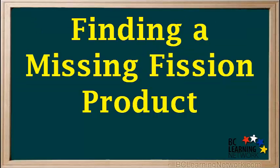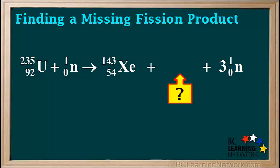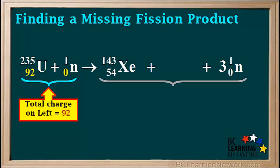Sometimes we are given an equation for a fission reaction with one of the products missing. We can easily determine this product using the conservation of charge and mass. Let's do an example. Here we're given a fission reaction for uranium-235. Xenon-143 is one product, and we're asked to find the other one.